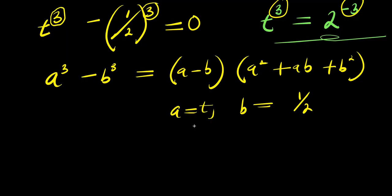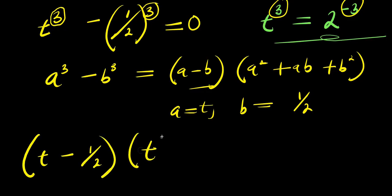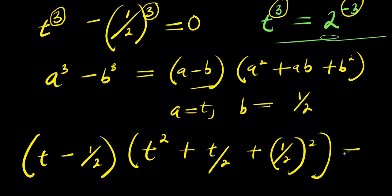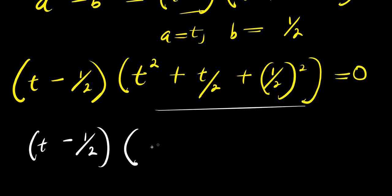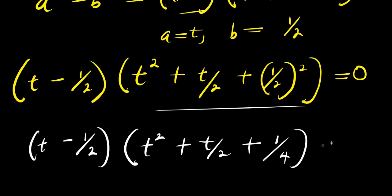So let's do that. We are going to have a minus b — that means t minus 1 over 2 — times a squared, that is t squared, plus ab, that is t times 1 over 2, which is t over 2, plus b squared, that is 1 over 2 to the power of 2, and everything equals 0. Simplifying further, we have t minus 1 over 2, times t squared plus t over 2 plus 1 over 4, equals 0.